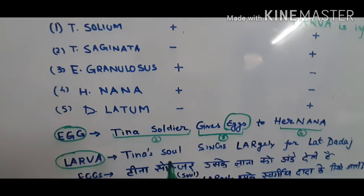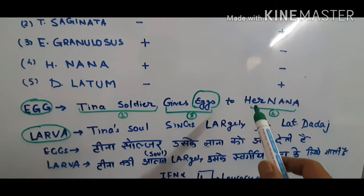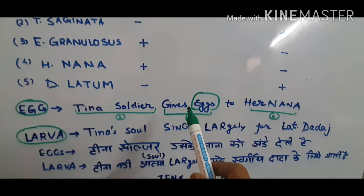With a simple mnemonic — just two lines and one story — egg is the infective stage in certain parasites. I will explain in both Hindi and English. You need to remember: Taenia is a soldier — she is a soldier for her country. Taenia solium gives eggs to her Nana. Taenia ke Nana ko eggs chahiye the.